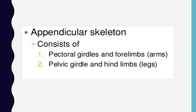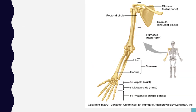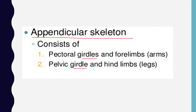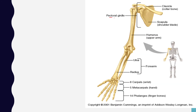Now let's recall the appendicular skeleton, which is related to the limbs. It consists of girdles — we have two girdles: the pectoral girdle and the pelvic girdle. The pectoral girdle is related to the upper limbs, and the pelvic girdle is related to the lower limbs.